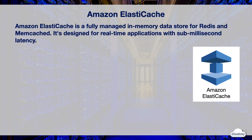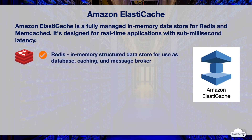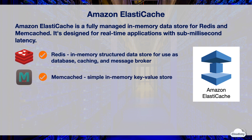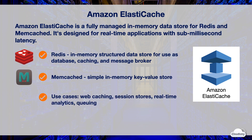Amazon ElastiCache is a fully managed in-memory data store and cache service for Redis and Memcached, designed to power real-time applications with sub-millisecond latency. In-memory databases give you higher throughput and lower latency than disk-based databases. Applications that implement in-memory databases significantly reduce disk operations and improve overall performance. ElastiCache offers two data store options: Redis, for complex structured data, web caching, and message brokering; and Memcached, a simple in-memory key-value store for simple caching. ElastiCache is suited for web caching, session stores, real-time analytics, and queuing services.